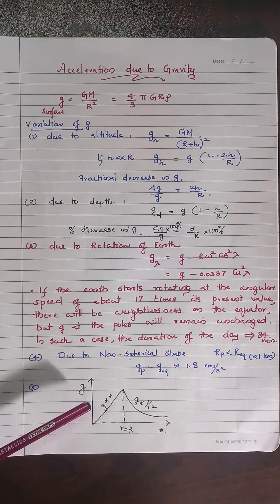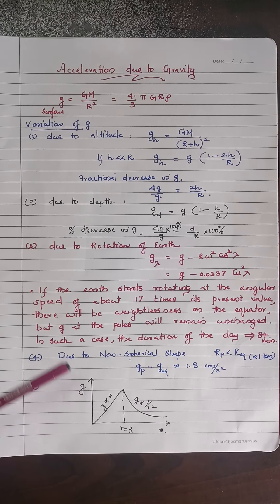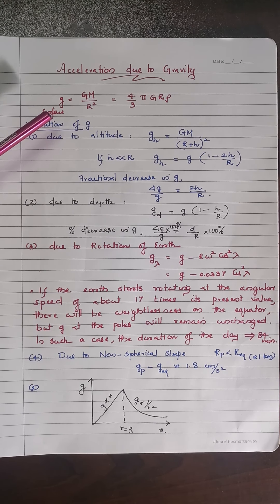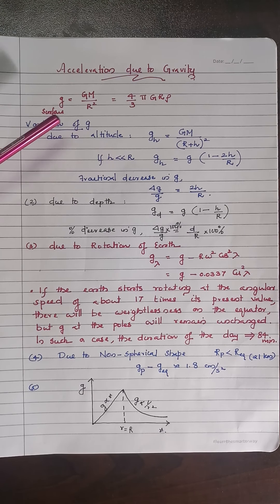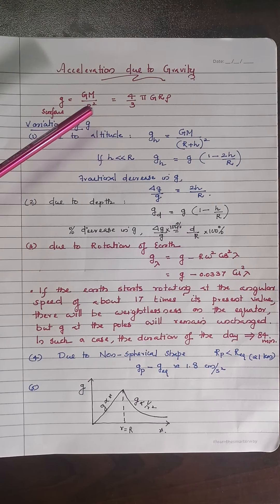The next very important concept is acceleration due to gravity — the force per unit mass. The simple formula is g = GM/R² on the surface of Earth. In terms of density, a very important equation is g = (4/3)πRρG.